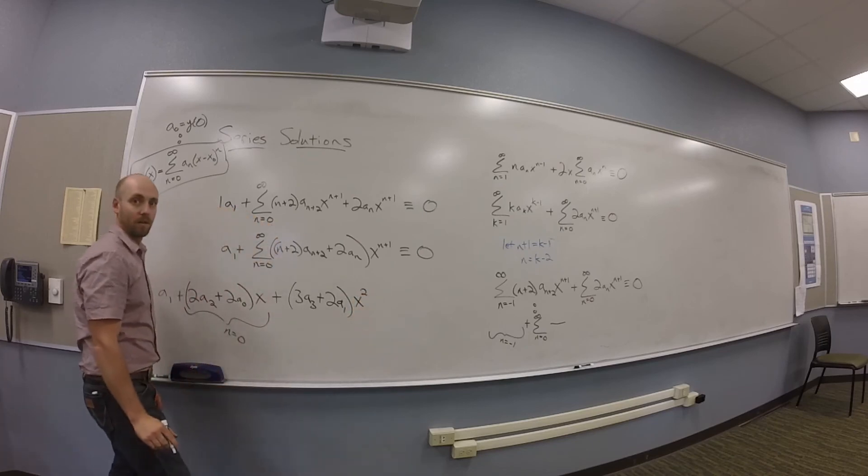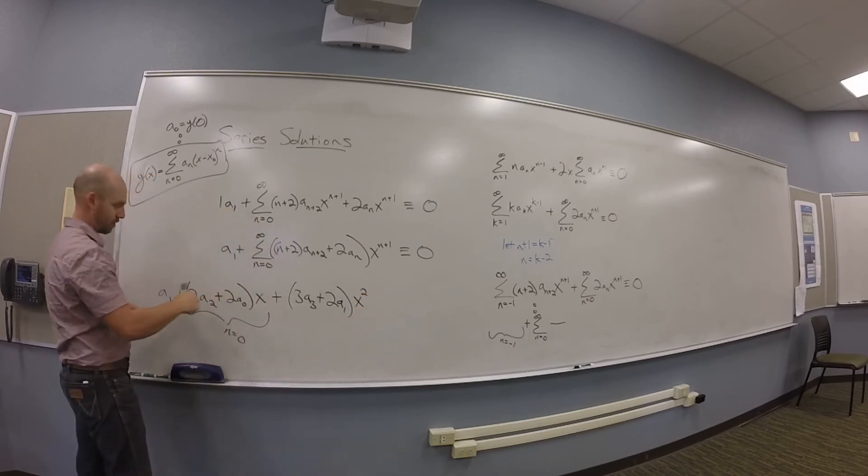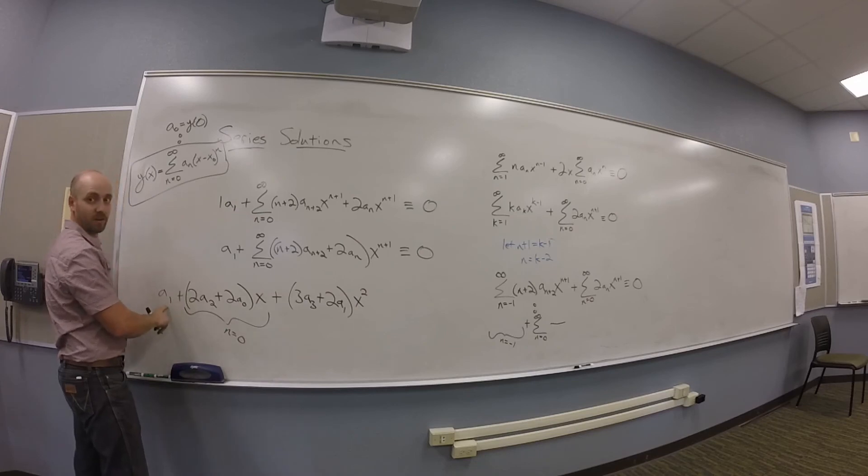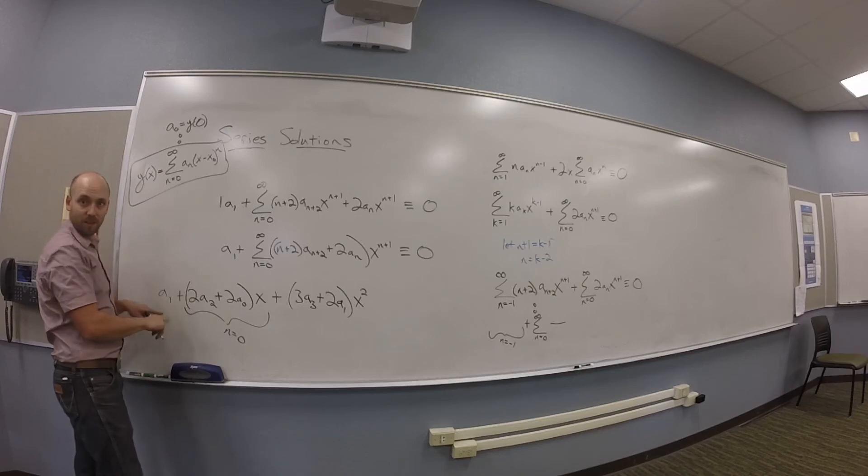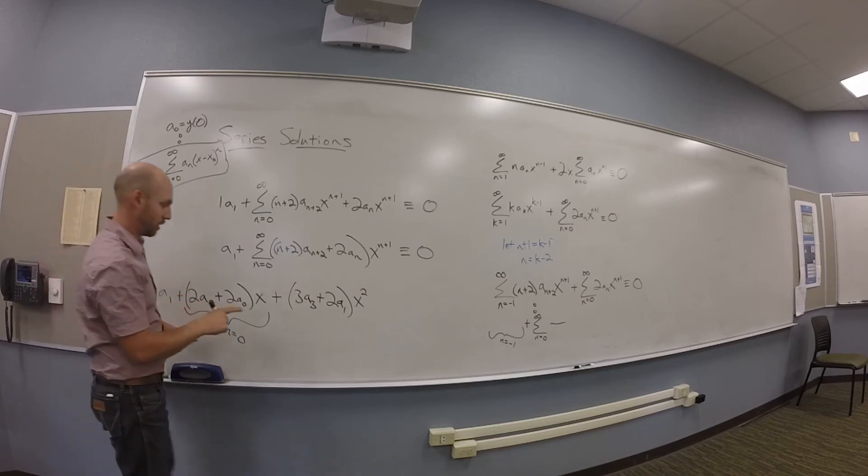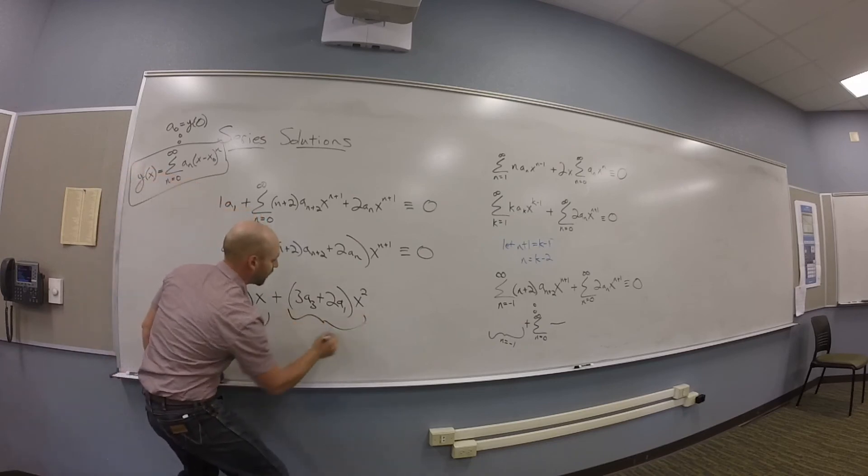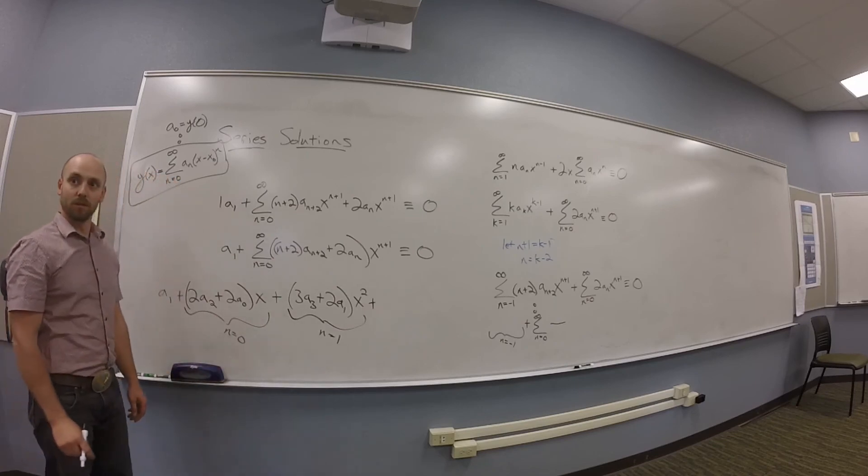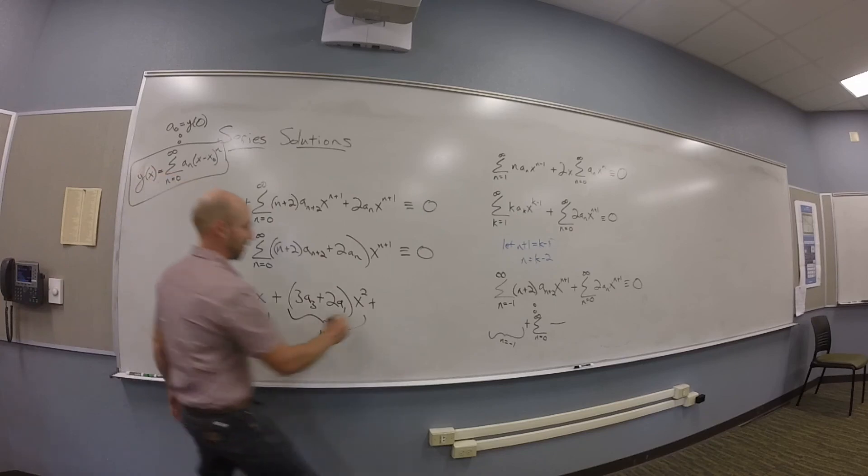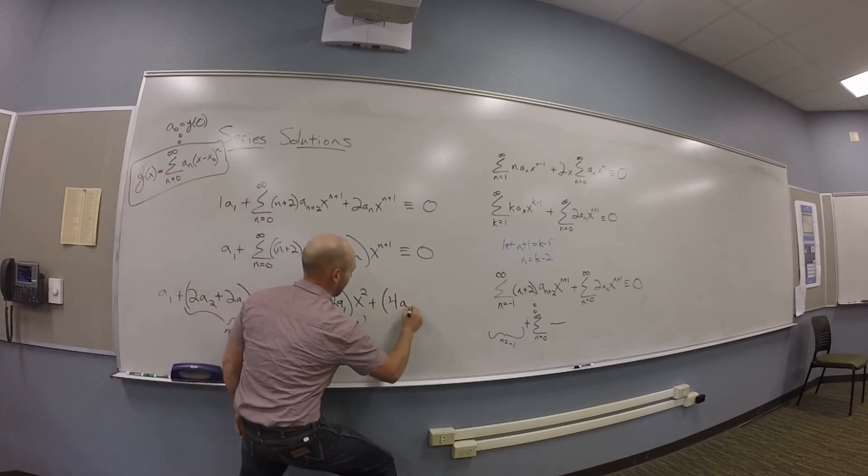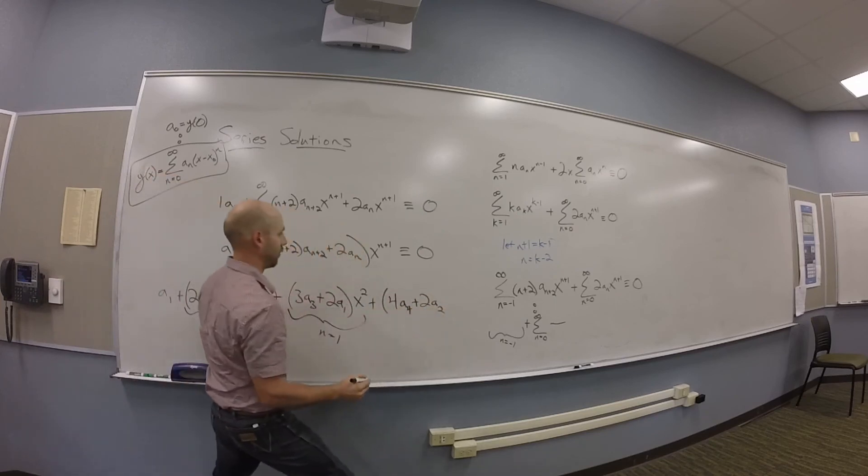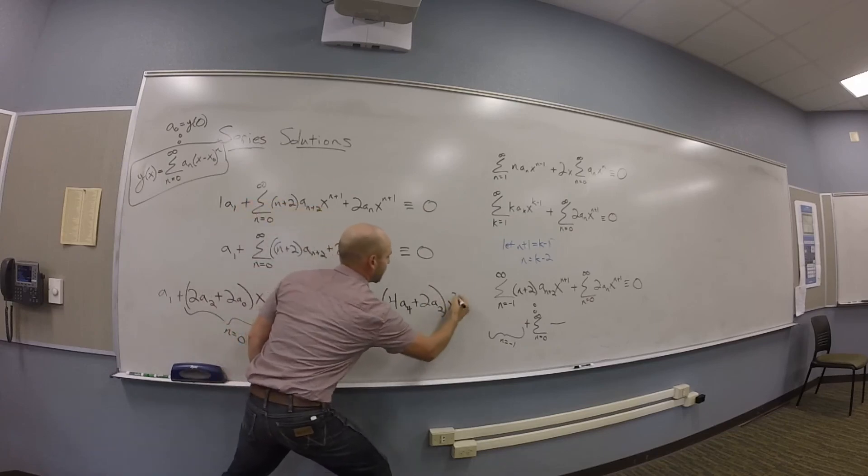That's the N is 0 term. Then you need a plus. This should be my N is 1 term, right? So I get 3A3 plus 2A1 X squared. And then you snag that A1 from the front. This guy doesn't have any x's though. You guys see that? This one doesn't have any x's. Weird. Anyway, that was the N is 1 term. And then there should be a plus 4A4 plus 2A2 X cubed.